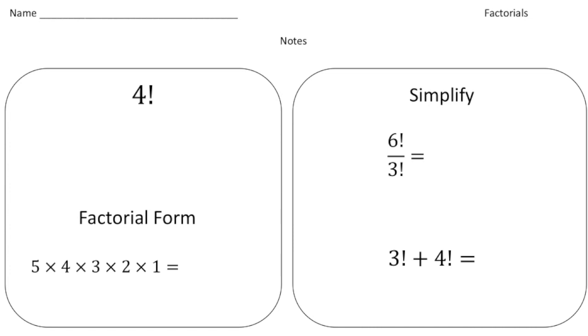Alright, so what exactly is a factorial? Well, a factorial function says to multiply a series of descending natural numbers. So let me show you what that means. So anytime you see this little exclamation point, that's a factorial function.